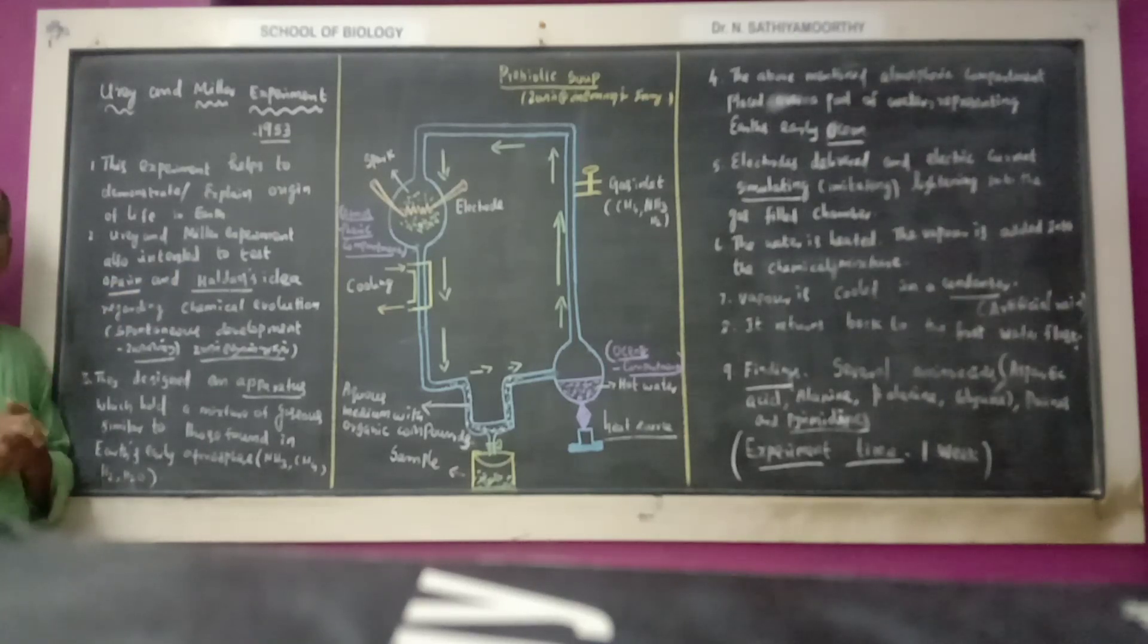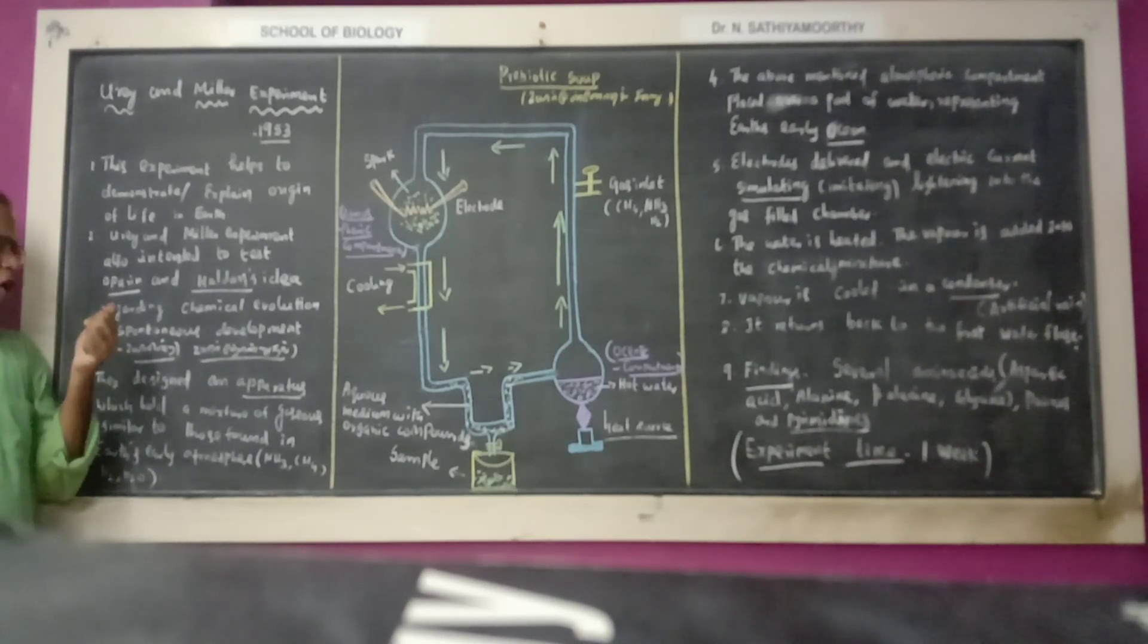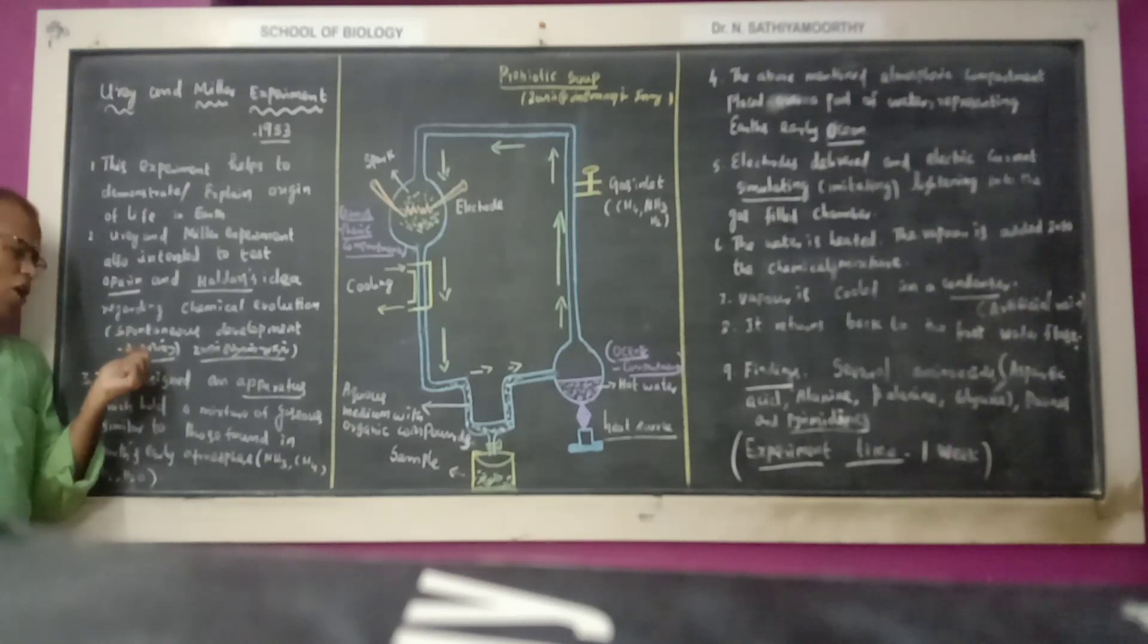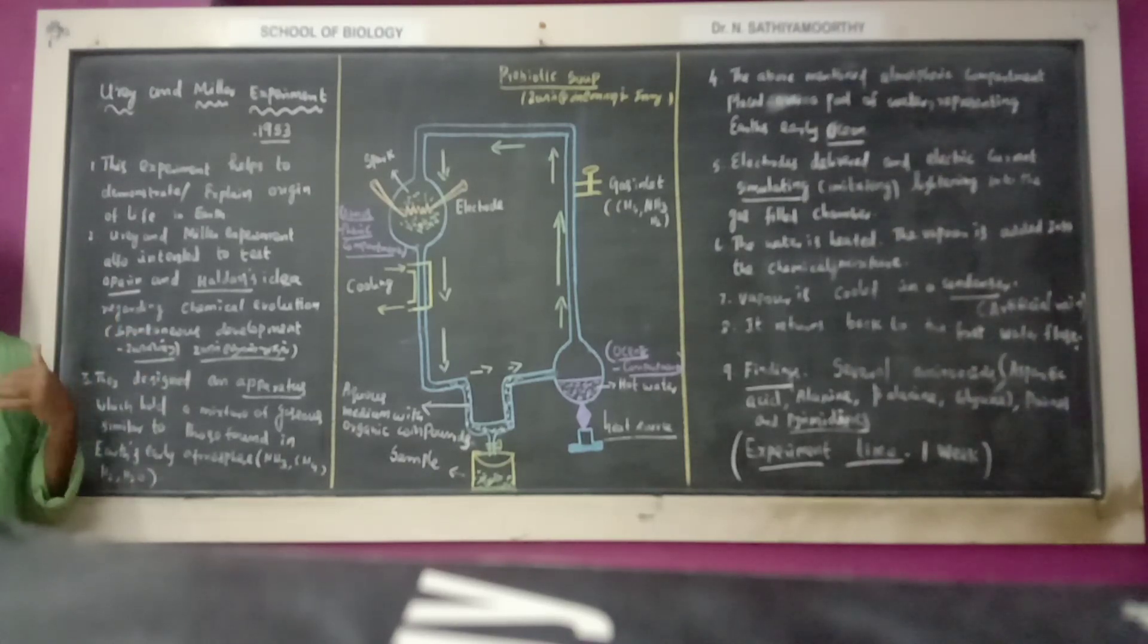Oparin and Haldane's idea is that the origin of species takes place by spontaneous development. Due to various reactions in the environment, all the new species in the Earth is spontaneous and all the living organisms or the primitive living organisms are originated from inorganic substances gradually.